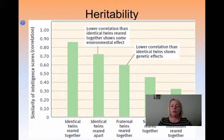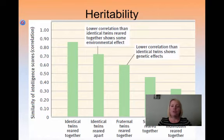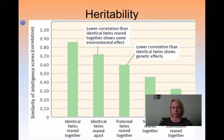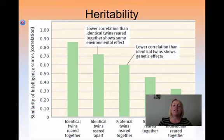The difference between fraternal twins reared together and siblings reared together is that fraternal twins are raised more in the same environment — same time, place, parenting styles, and all of those things. So identical twins reared together having the highest correlation tells us there is a genetic component to intelligence, while identical twins reared apart gives us evidence of environmental factors as well.